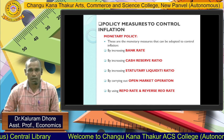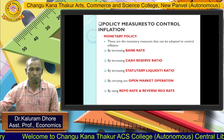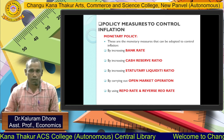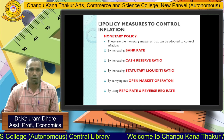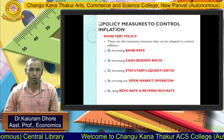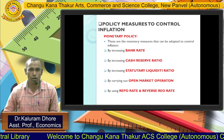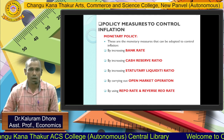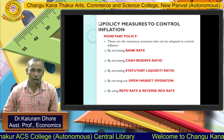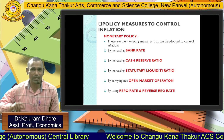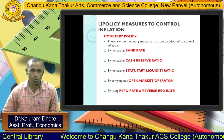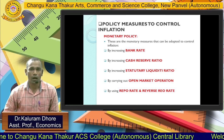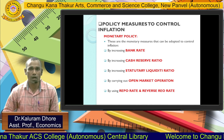Once the bank rate increases, people can borrow less from the bank, and through that, the RBI can keep control on money supply in the economy. Second is CRR — Cash Reserve Ratio. By increasing the Cash Reserve Ratio, RBI keeps control on inflation. All commercial banks are required to keep a certain percentage in RBI as cash. Once RBI starts increasing the CRR, banks have to keep more cash reserve, leaving them less to lend to borrowers, and through that, RBI keeps control on inflation.